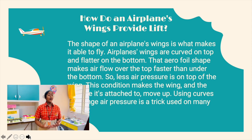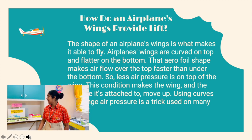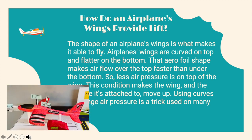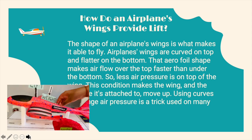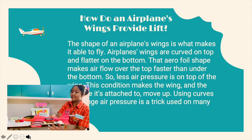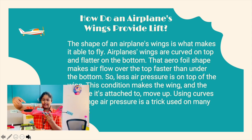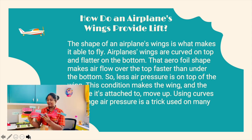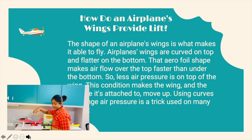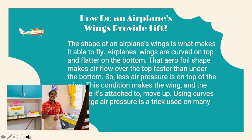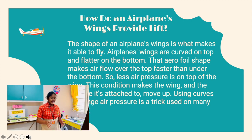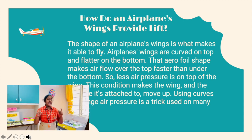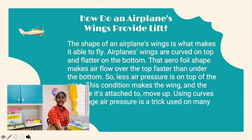Now let's know how does an airplane's wings provide lift? The shape of an airplane's wings is what makes it able to fly. Airplane wings are curved on the top and flatter on the bottom. This is a wing — curved on the top and flatter on the bottom as we can see. Less air pressure is on the top of the wing, and this condition makes the wing and the airplane it's attached to move up. Using curves to change air pressure is a trick used on many aircraft.